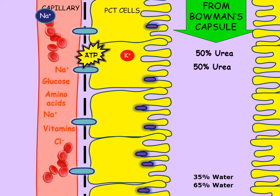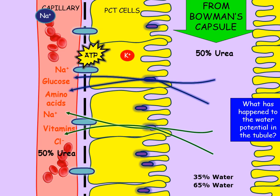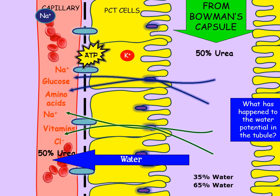Urea, though we don't want to reabsorb it, is a very small molecule and we can't stop it happening — it goes straight through the membranes. Because all of those solutes have now been removed from the filtrate, the filtrate now has a very high water potential, certainly higher than the blood in the capillaries. So water moves by osmosis from the high water potential in the filtrate to the lower water potential in the capillaries. In fact, most of the water that was filtered out of the blood is reabsorbed here.